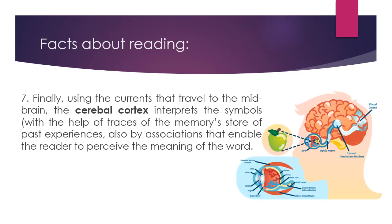Finally, using the currents that travel to the midbrain, the cerebral cortex interprets the symbols with the help of traces of the memory store of past experiences, and also by associations that enable the reader to perceive the meaning of the word. After the currents travel to the midbrain, the information is processed to the cerebral cortex, where we relate our previous experiences to the images we have seen, and by that we can perceive the meaning of the word or image read from the text or material.